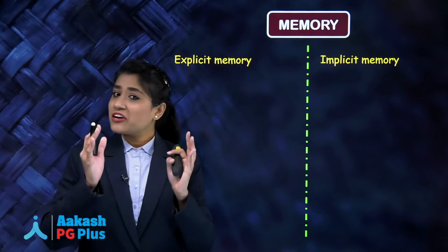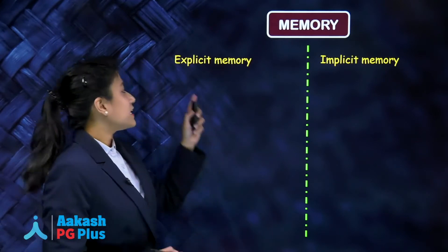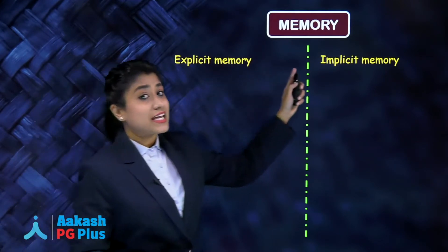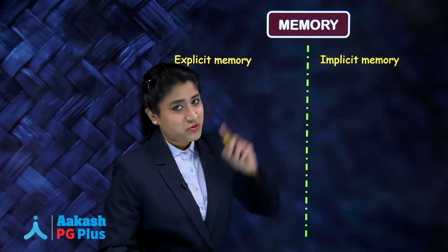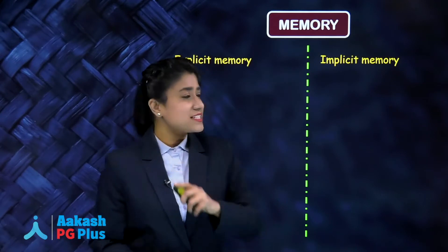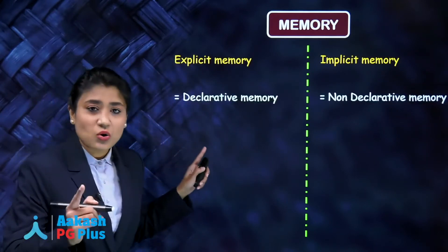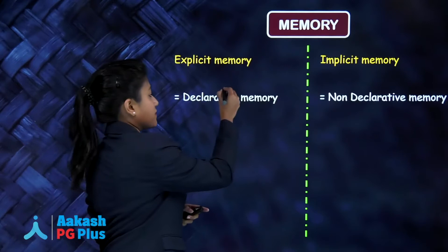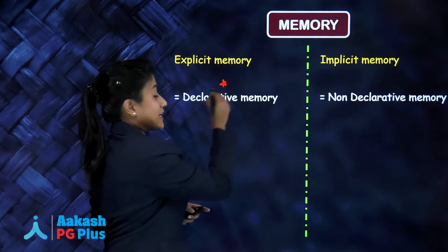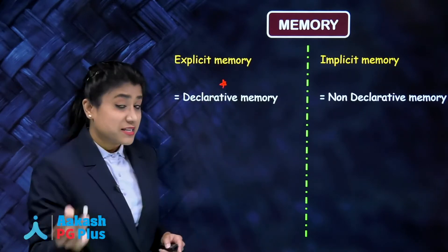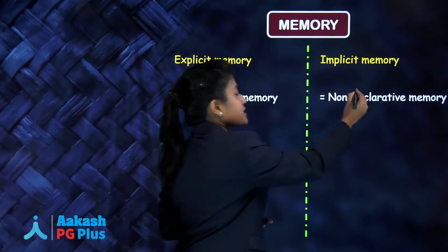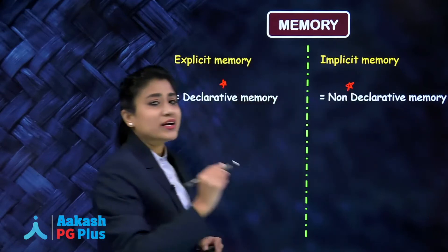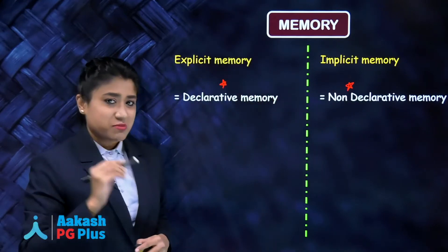There are two main types of memory: explicit memory and implicit memory. Explicit memory is also called declarative memory, while implicit memory is called non-declarative memory. Write it down.